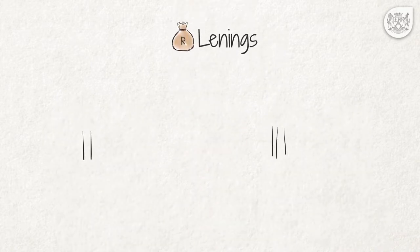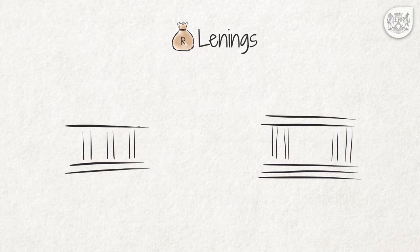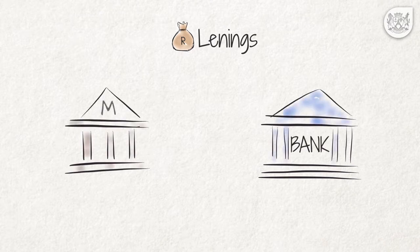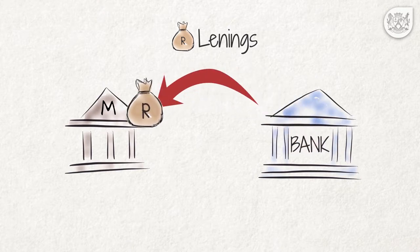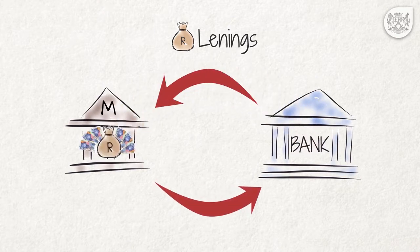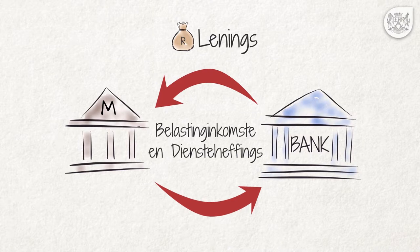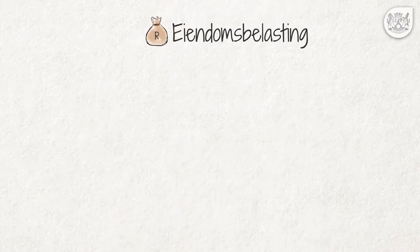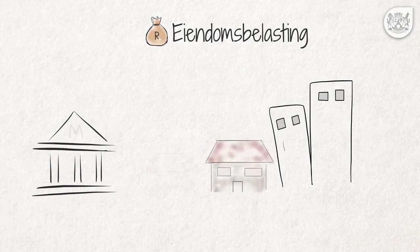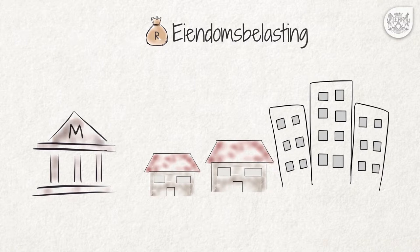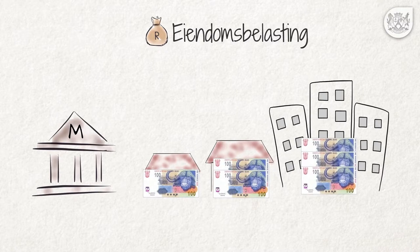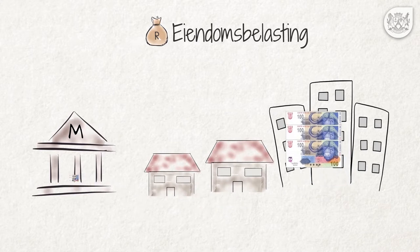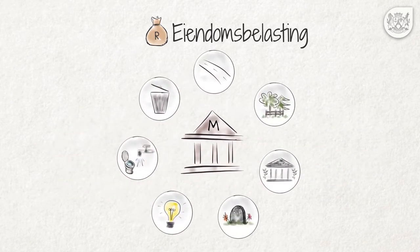Lenings. Dikwels is die infrastruktuur toekennings te min om vir al die konstruksiekoste te betaal. Munisipaliteite moet dan geld by 'n bank leen. Munisipaliteite moet hierdie lenings plus die rente daarop uit sy belastingsinkomste en diensteheffings betaal. Eiendomsbelasting. Munisipaliteite, uitgesonder distriksmunisipaliteite, hef ook belasting op die waarde van eiendomme soos huise en besighede. Eiendomsbelasting stel munisipaliteite in staat om die koste van dienste te subsidieer.